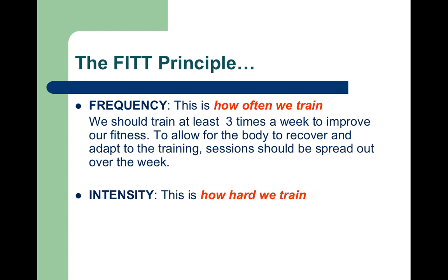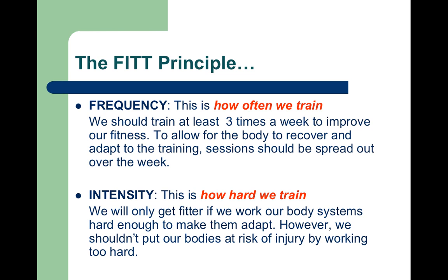To show progressive overload through frequency, we might start training three times a week and then increase to four or five times. Intensity is how hard we train — we will only get fit if we work our body systems hard enough to make them adapt, but we shouldn't put our bodies at risk of injury by working too hard. Training puts our body under strain, which causes slight muscle damage; muscles then adapt by growing back bigger and stronger. To show progressive overload in intensity, we train harder by lifting heavier weights, running faster, or swimming for longer.